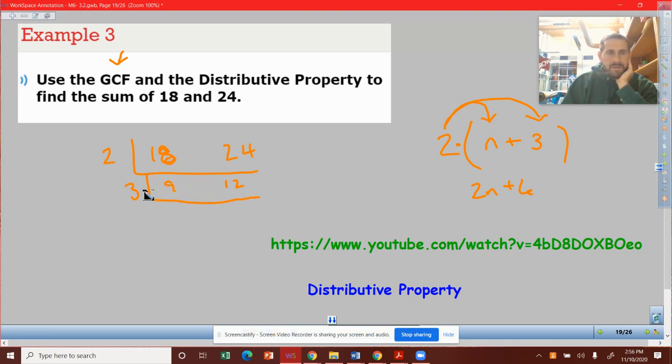3 goes into 9 three times, and 3 goes into 12 four times. And then is there a prime number that goes into 3 and 4? It's just 1. So as you remember, that's one and done. So what is the GCF?